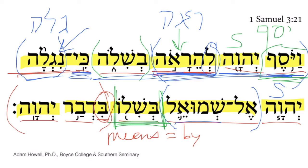As one final translation then, we have: 'And the Lord was seen again at Shiloh, for the Lord had revealed Himself to Samuel at Shiloh by the word of the Lord.'